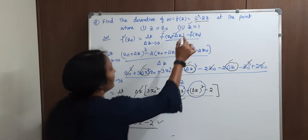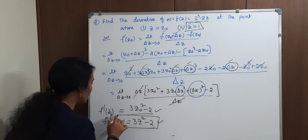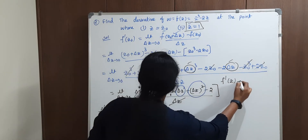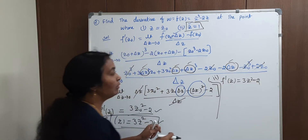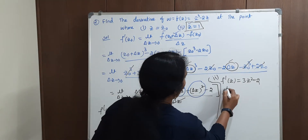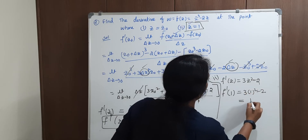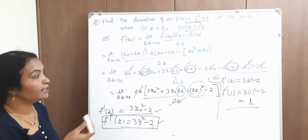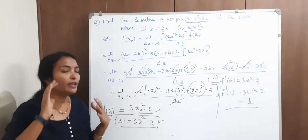Now for z equal to 1: after simplification, the derivative is f dash of z equal to 3z squared minus 2. Put z equal to 1: f dash of 1 equals 3 times 1 squared minus 2, which equals 3 minus 2, that is 1. So the function value at z equal to 1 is 1. I think that's very very simple.